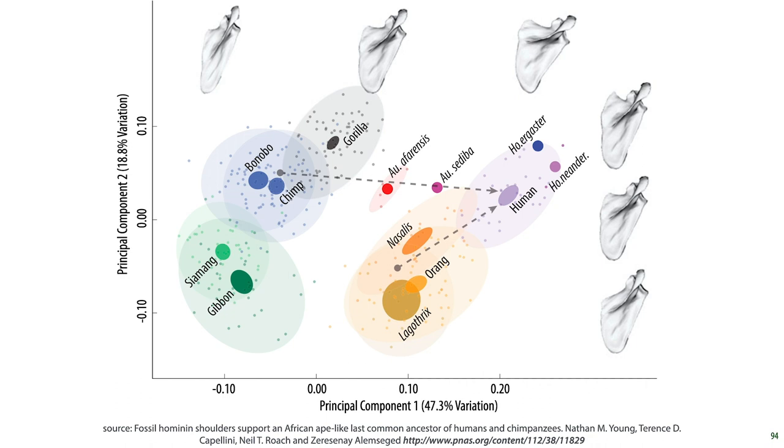Note also that this data gives us some clues about how humans might have developed. Proto-humans, Australopithecus afarensis and Australopithecus sediba, are both on a straight line between the cluster of bonobos, chimps and gorillas and the point where modern humans are. These three are indeed the great apes considered to be the most like the ones from which we developed.